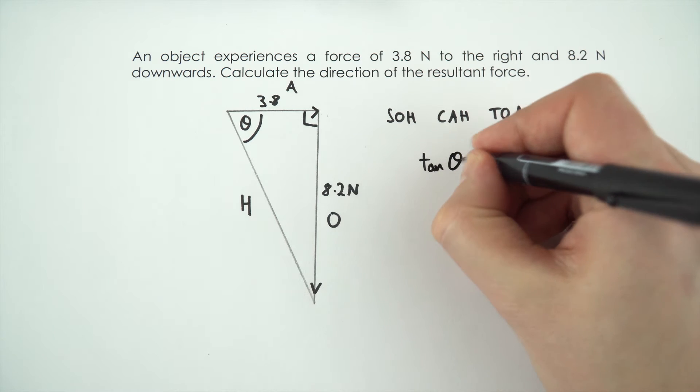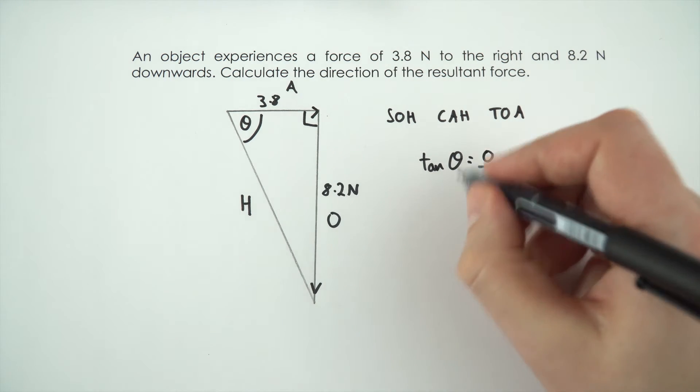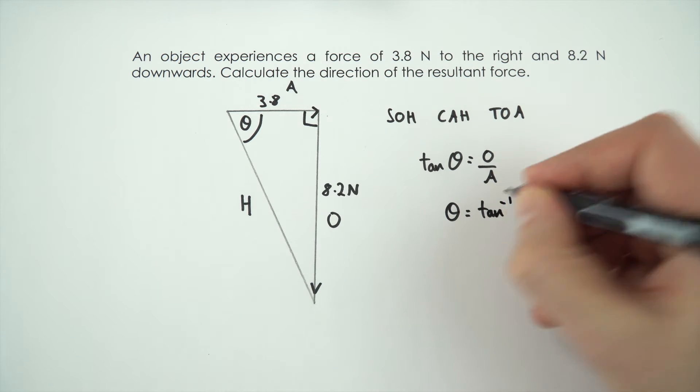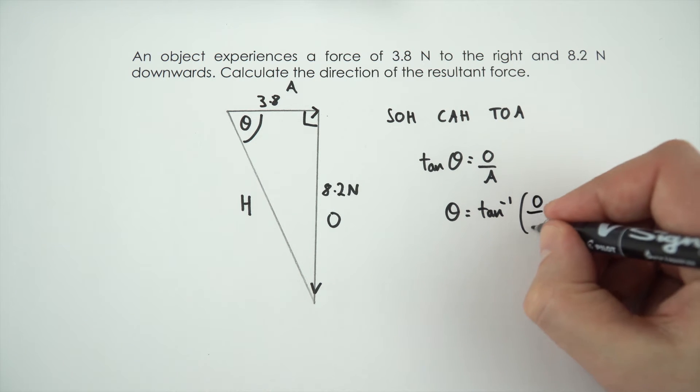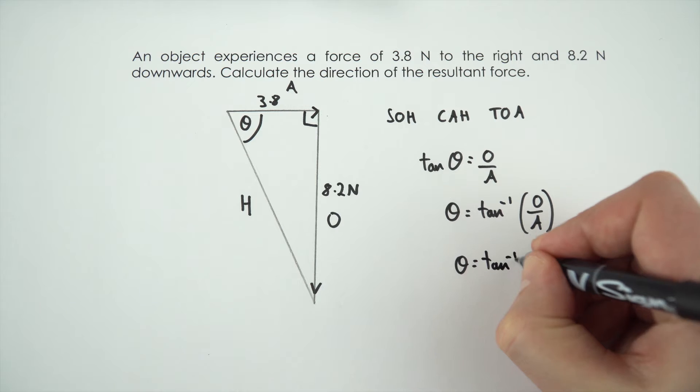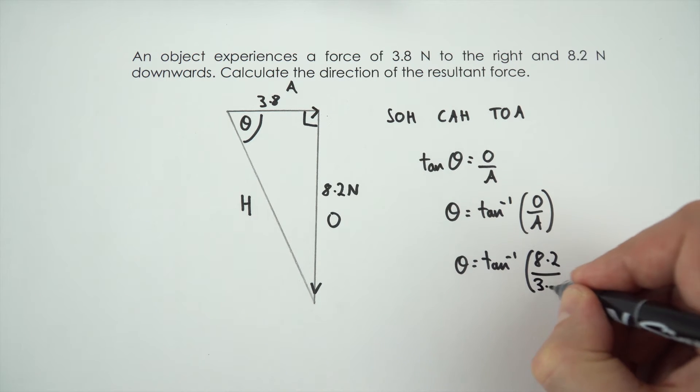So we can say that tan theta equals the opposite side over the adjacent. We want to find out theta, so I'm going to rearrange this to say that theta is inverse tan, or tan to the minus 1, of opposite over adjacent. So theta is going to be inverse tan of 8.2 divided by 3.8.